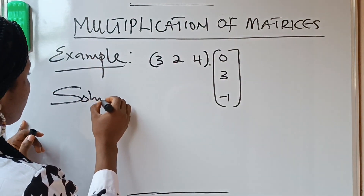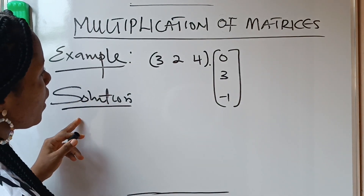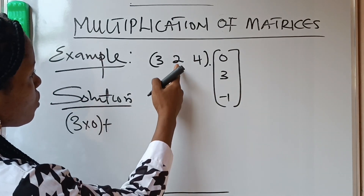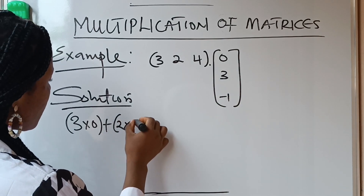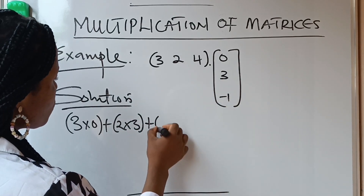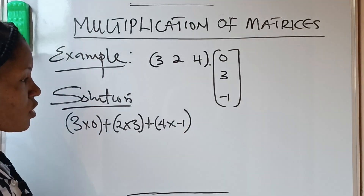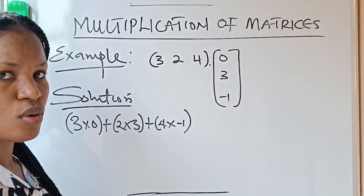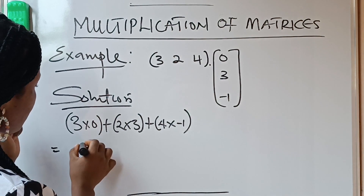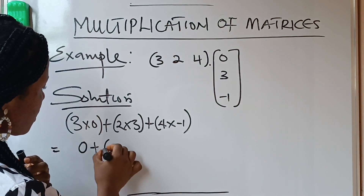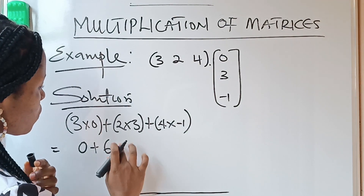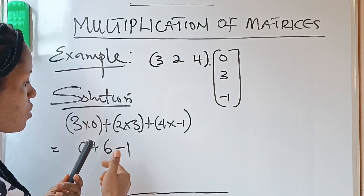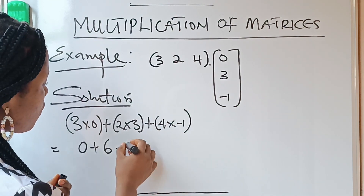Solution: we have 3 times 0, plus 2 times 3, plus 4 times minus 1. Notice that the first multiplies the first, the second multiplies the second, the third multiplies the third. So we go ahead to get the result: 3 times 0 is 0, plus 2 times 3 is 6, plus 4 times minus 1 — because plus times minus will always give you minus — 4 times minus 1 will give you minus 4.